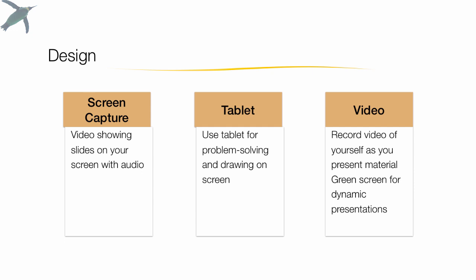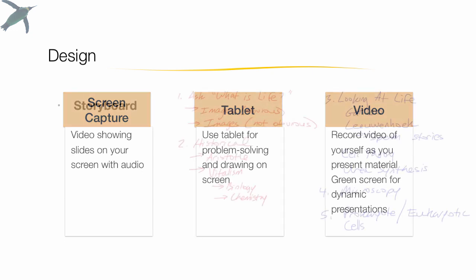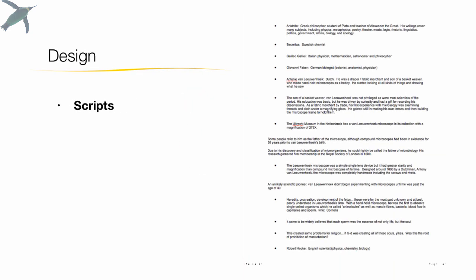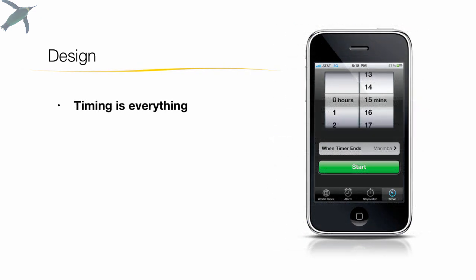I always storyboard — I write out what I'm going to be doing. I like to write it instead of type it, but I do write on a tablet on my computer. Sometimes I script and sometimes I don't. I'm generally not a scripter, but some people find it makes them much more comfortable to write out exactly what they're going to say — that's really up to you. And watch your timing: time yourself, see how long it's actually going to take you to get through the material.